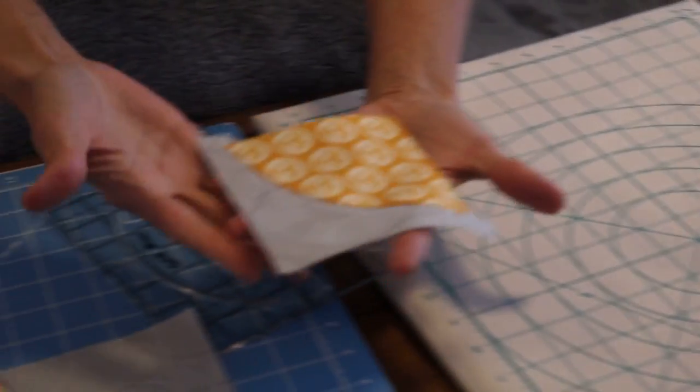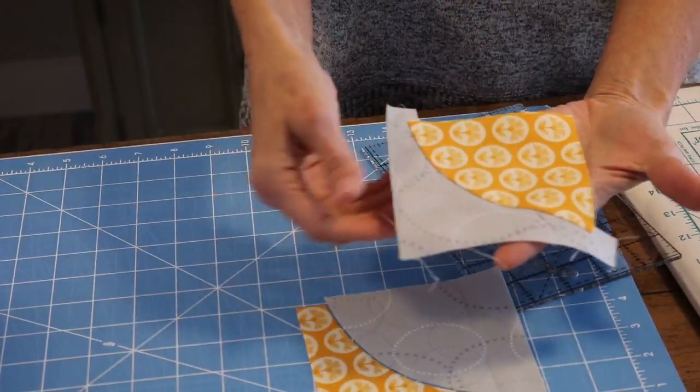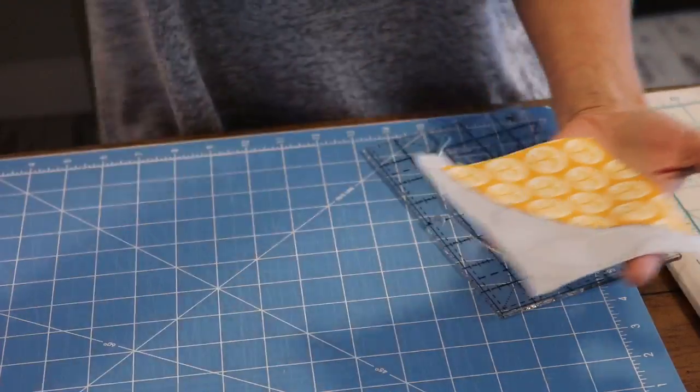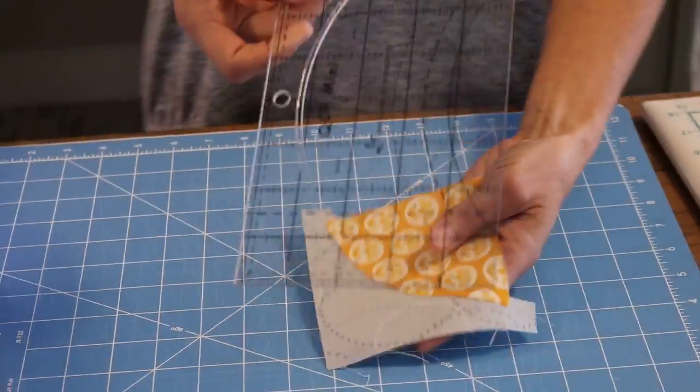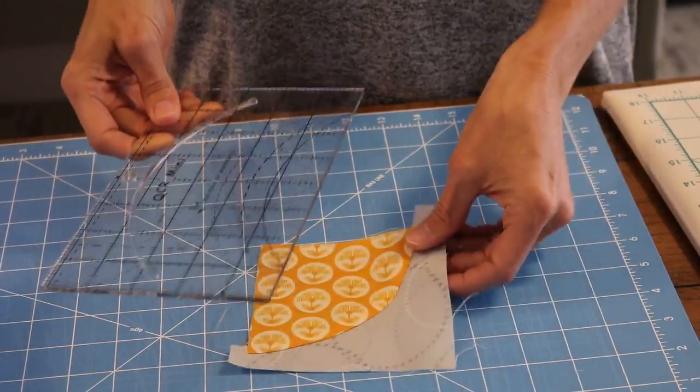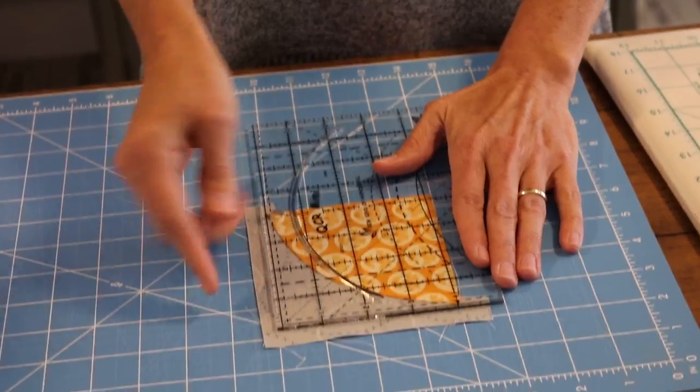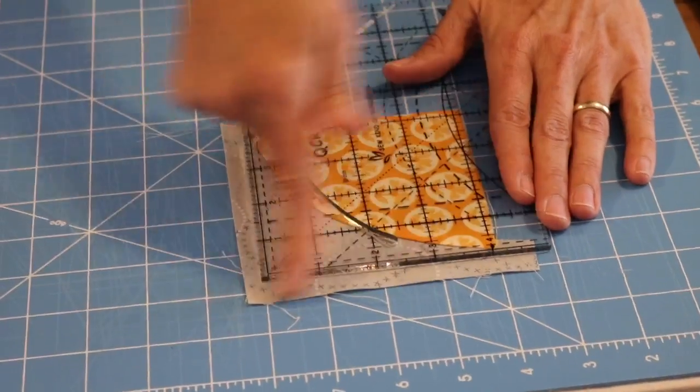So then the next thing we're going to do is we're going to square that up to a five-inch, or sorry, a four-inch block. And the QCR mini is also a square-up ruler. So I'm going to set the block underneath my ruler just like this.